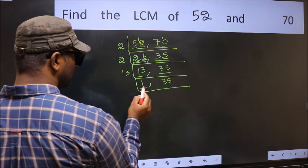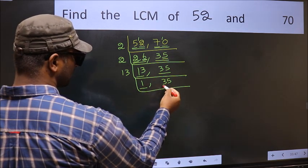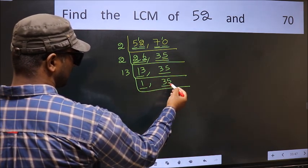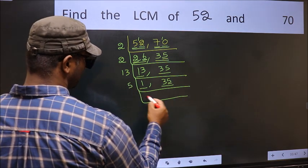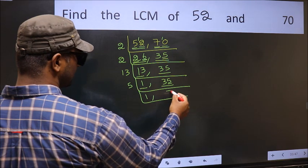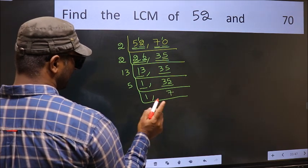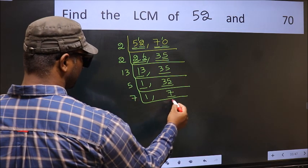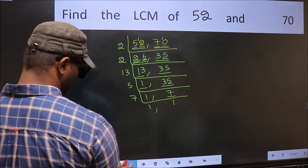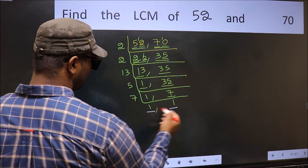Now we got 1 here, so focus on the other number 35. Last digit 5, so take 5. When do we get 35 in 5 table? 5×7=35. Now here we have 7. 7 is a prime number, so 7×1=7. So we got 1 in both places.